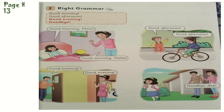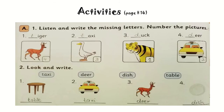In the morning we use 'good morning,' at noon we use 'good afternoon,' and in the evening or night we use 'good evening.' This is the activity on your page number 14. The first one is: listen and write the missing letters and number the pictures.